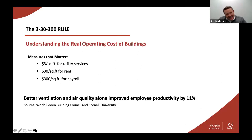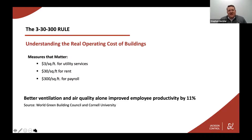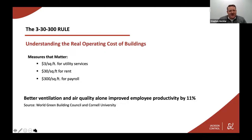There is the 330-300 rule, which is part of understanding what it costs to run a building: $3 a square foot for utilities, $30 a square foot for rent, and $300 a square foot for payroll. Better ventilation and air quality can improve employee productivity by 11%. To put that into a real-world number, if you're at $300 a square foot for payroll and have 10,000 square feet of offices, that equates to around $300,000 worth of productivity. If you have an office that size, increasing your air quality can increase productivity enough that you're essentially saving the equivalent of a person or two.